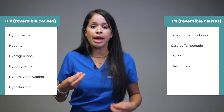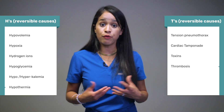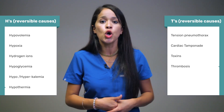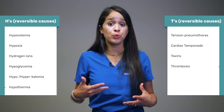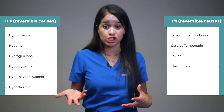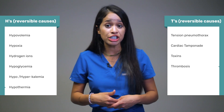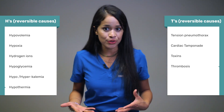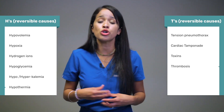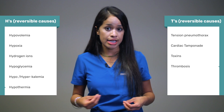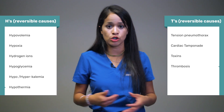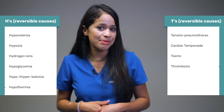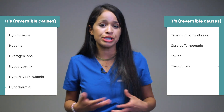Hypoxia can be treated with oxygen. Another H is hydrogen ion, which can cause acidosis — the treatment of choice is sodium bicarbonate. Hypoglycemia can be treated with D50.